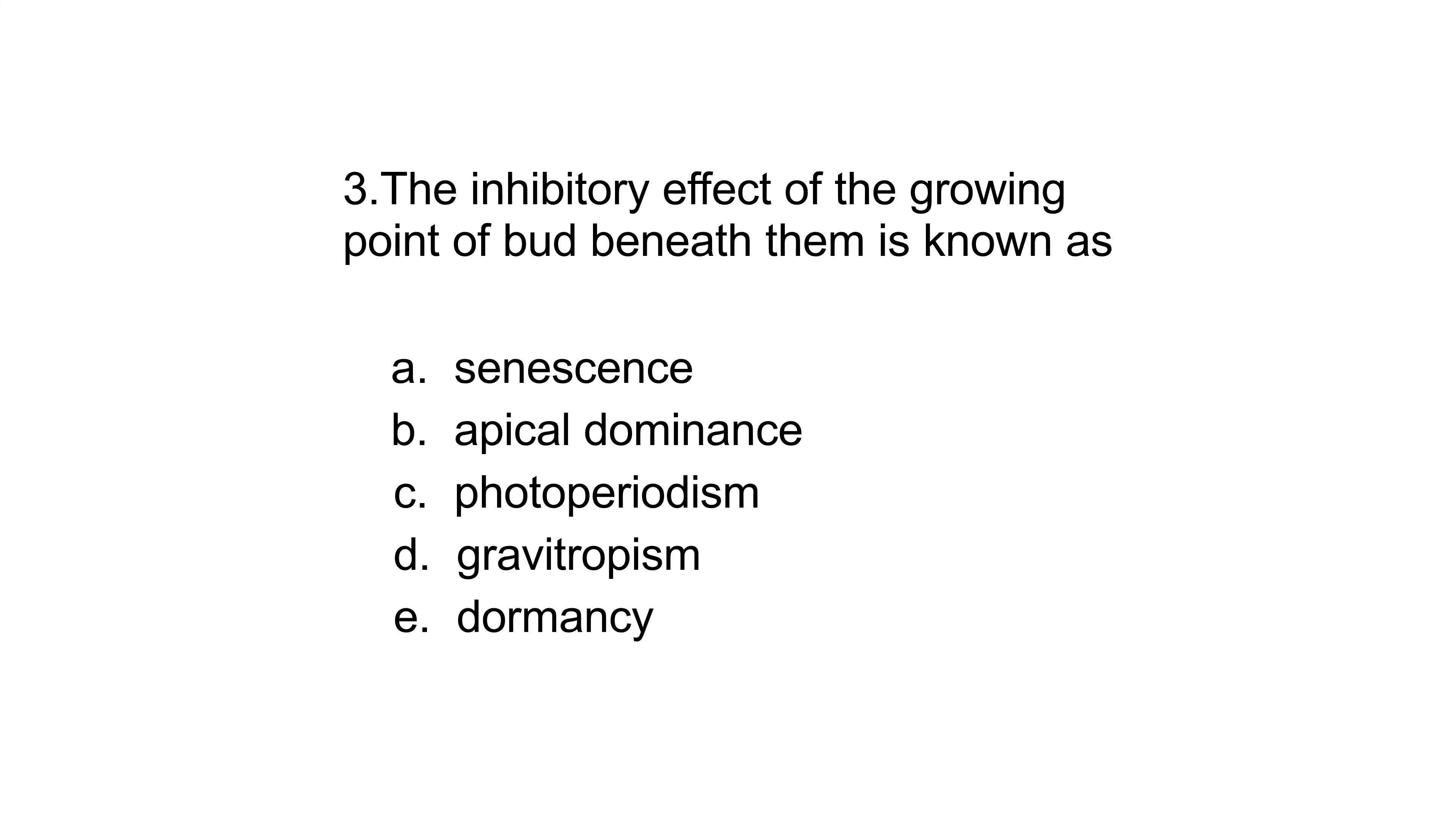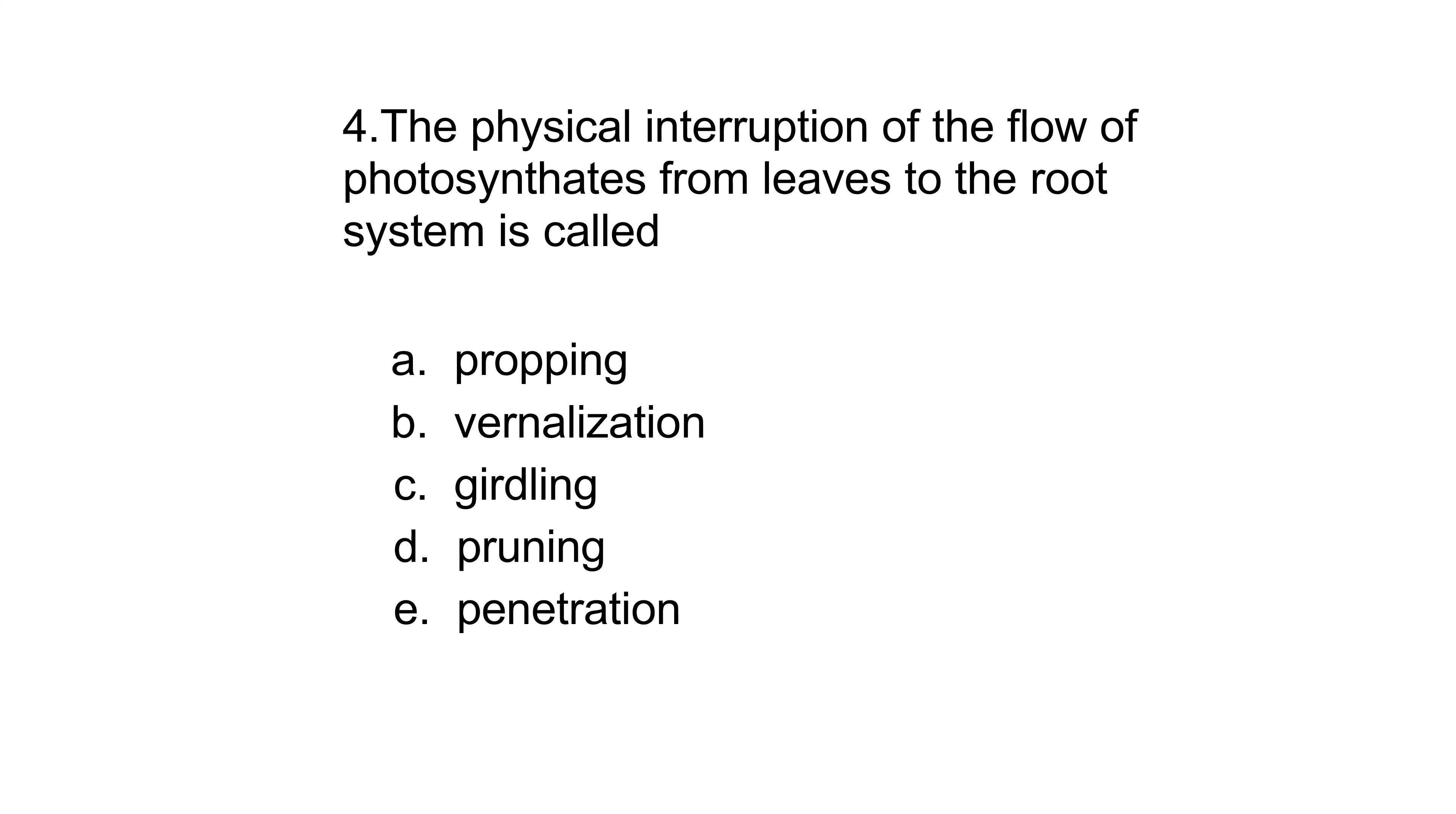Number three: The inhibitory effect of the growing point of bud beneath them is known as senescence, apical dominance, photoperiodism, gravitropism, or dormancy.